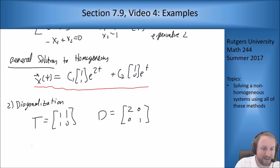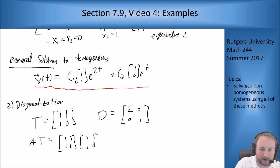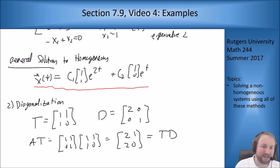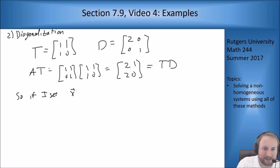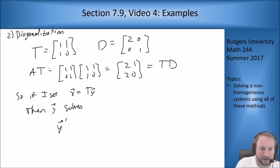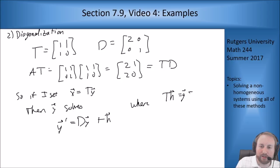We can check that A·T = [1,1;0,2]·[1,1;1,0] = [2,1;2,0] = T·D. If we set X = TY, then Y solves Y' = DY + H, where T·H = G. And G here is [e^t; t]. So let's figure out what H has to be.